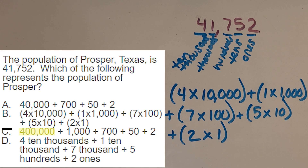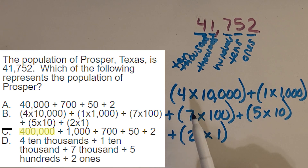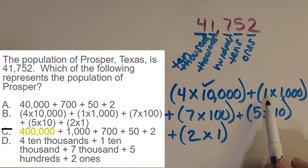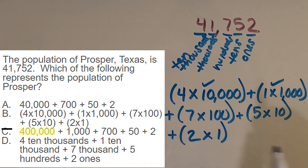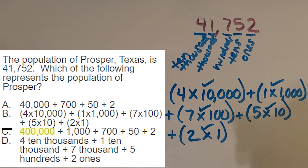So let's look at choice B and see if it matches. Does it say four groups of 10,000? Yes. One group of 1,000? Yes. Seven groups of 100? Yes. Five groups of 10? Yes. And two groups of one? Yes. B is looking pretty good — it matched in all those ways. I know we're probably going to go with B, but I like to go ahead and check that last choice just to make sure.